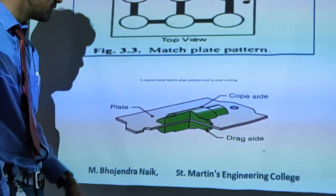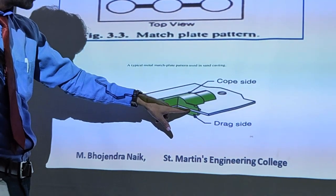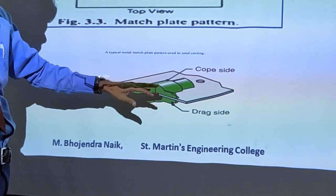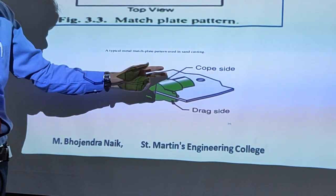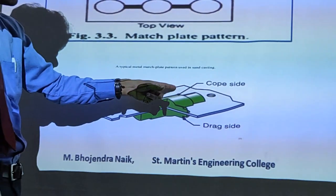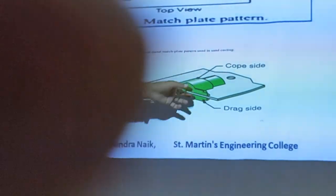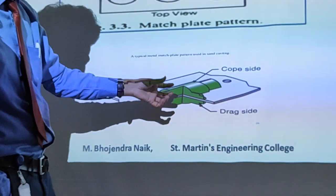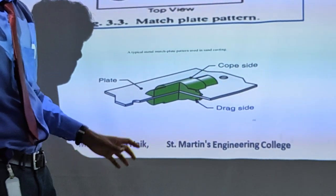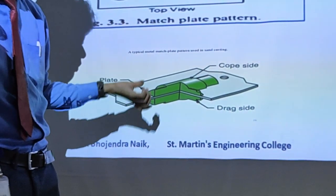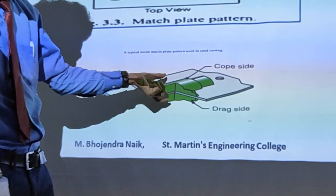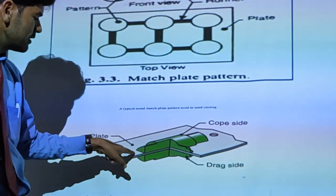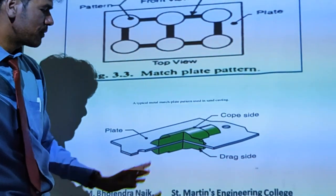In the match plate pattern, the top part should be like a flat surface and the top plate can be a curved portion. If you keep a curved piece in the cope or drag box, while removing from the moulding sand it would disturb the entire mould and you cannot get your desired casting. So these parts are attached to the plate. That is why it is called a match plate pattern.